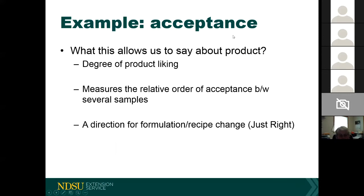At the end of acceptance testing, you can indicate the degree of product liking — is it extremely liked or disliked? You get a relative order of acceptance between samples. The just right scale is especially useful early in process development to identify your best formulation and guide recipe changes. It gives you actionable information — if there are too many vegetables, your action is to reduce them.